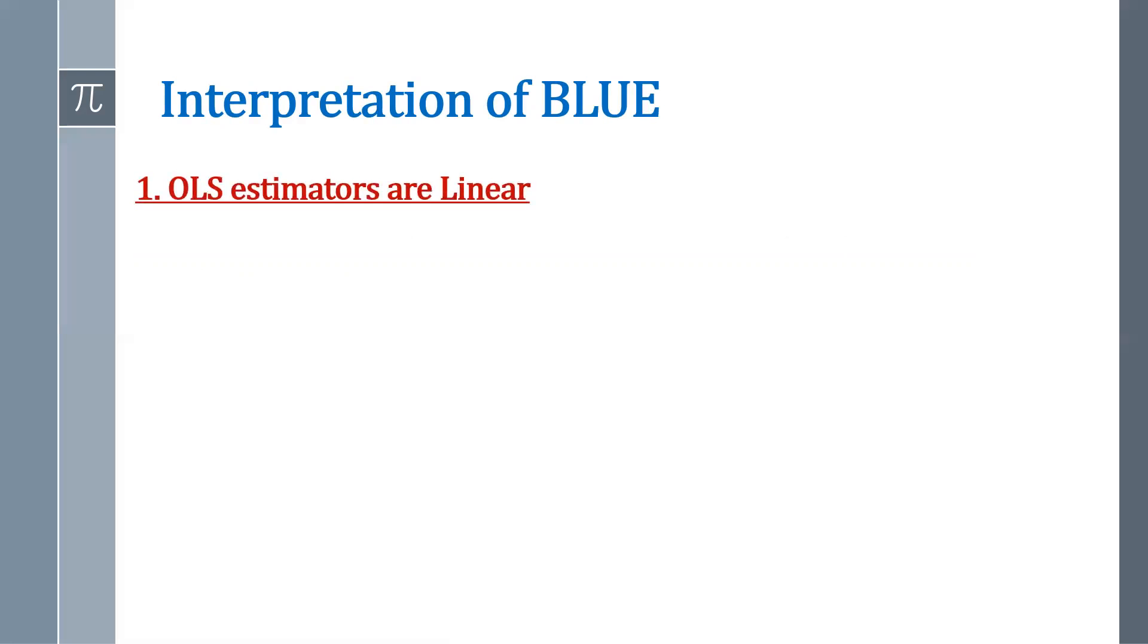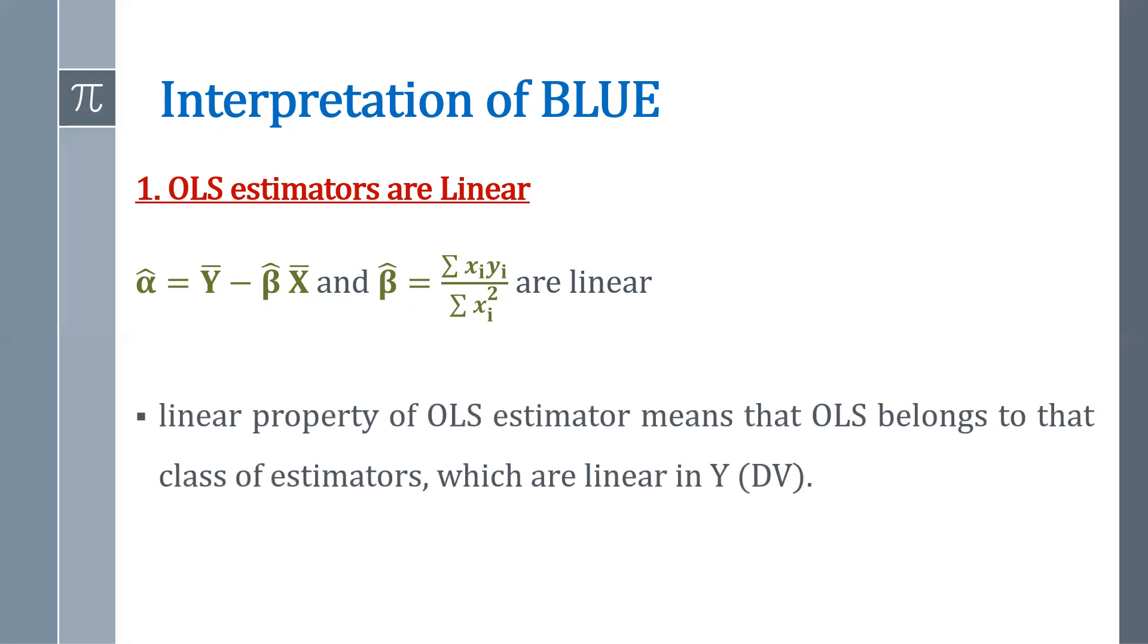So let's understand these three properties in detail. First, OLS estimators are linear. So here we have the formulas for OLS estimators. Alpha hat is equal to y bar minus beta hat x bar, and beta hat is equal to summation xi yi upon summation xi square. You can see my video on OLS estimators. I have already explained the derivation of these formulas. Now they are linear, which means that the OLS estimator, linear property of OLS estimator means that OLS belongs to that class of estimators which are linear in y.